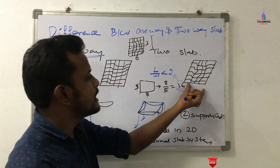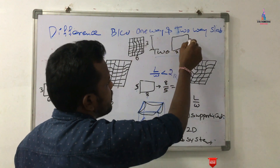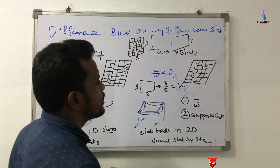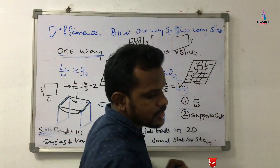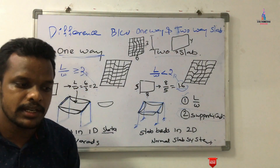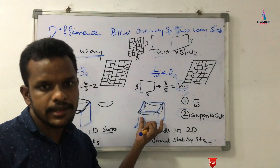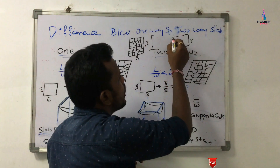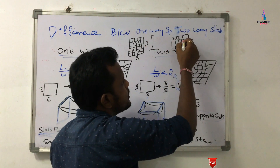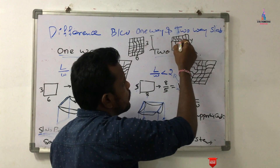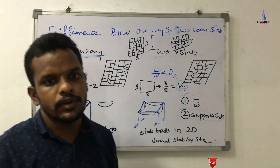For a two-way slab system with dimensions X and Y, both the distribution bars and the main bars consist of cranked bars. Due to all the supporting conditions present, we need to provide cranked bars in the horizontal direction as well as cranked bars in the opposite vertical direction.